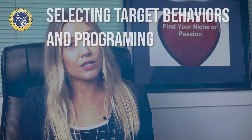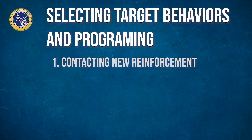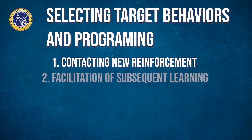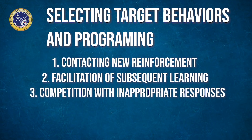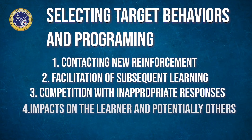Bosch and Fuqua's 2001 paper suggests the need for a systematic method for selecting target behaviors in programming, including thoughtful consideration of contacting new reinforcement, facilitation of subsequent learning like prerequisite skills, competition with inappropriate responses, impacts on the learner and potentially others, and social validity.